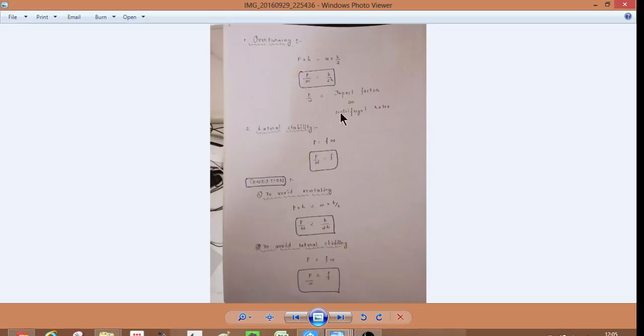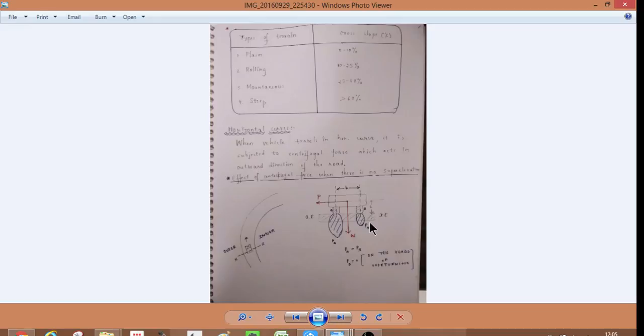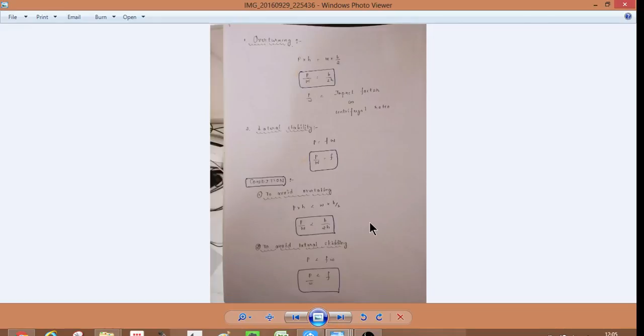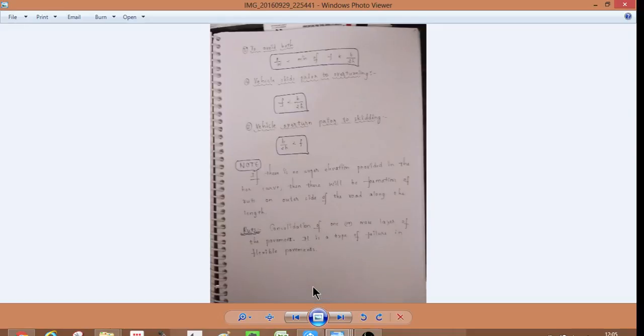So, if you remember these two, then you can derive these two. So, P by W. This figure must be very important. You shouldn't forget this figure. And then, P by W should be less to avoid overturning. P by W is less than B by 2H. And then, to avoid lateral skidding, P by W should be less than F. So, to avoid both should be minimum of these two.